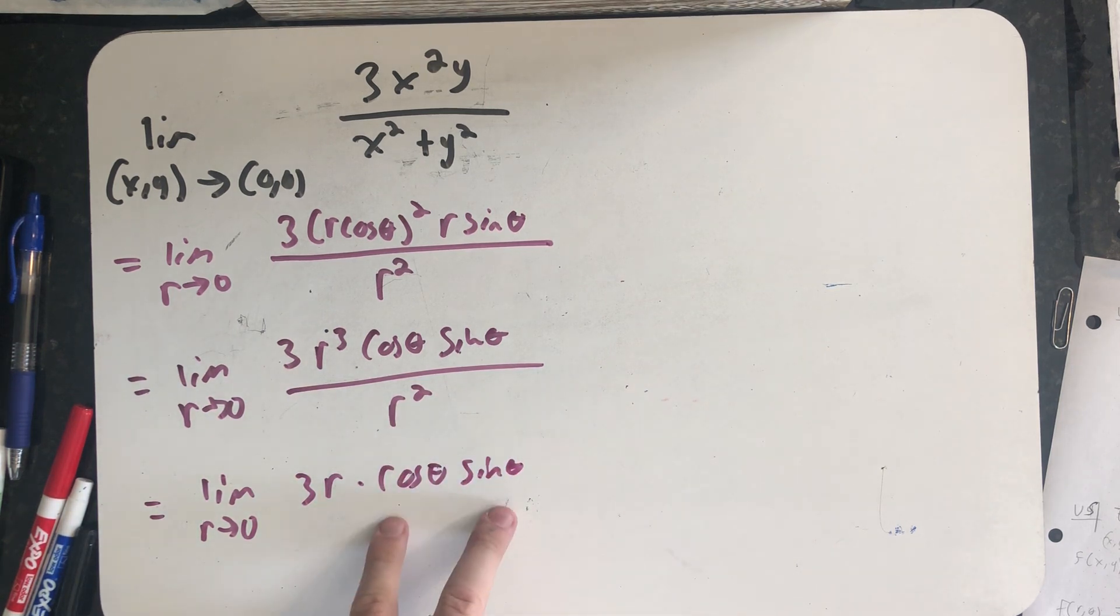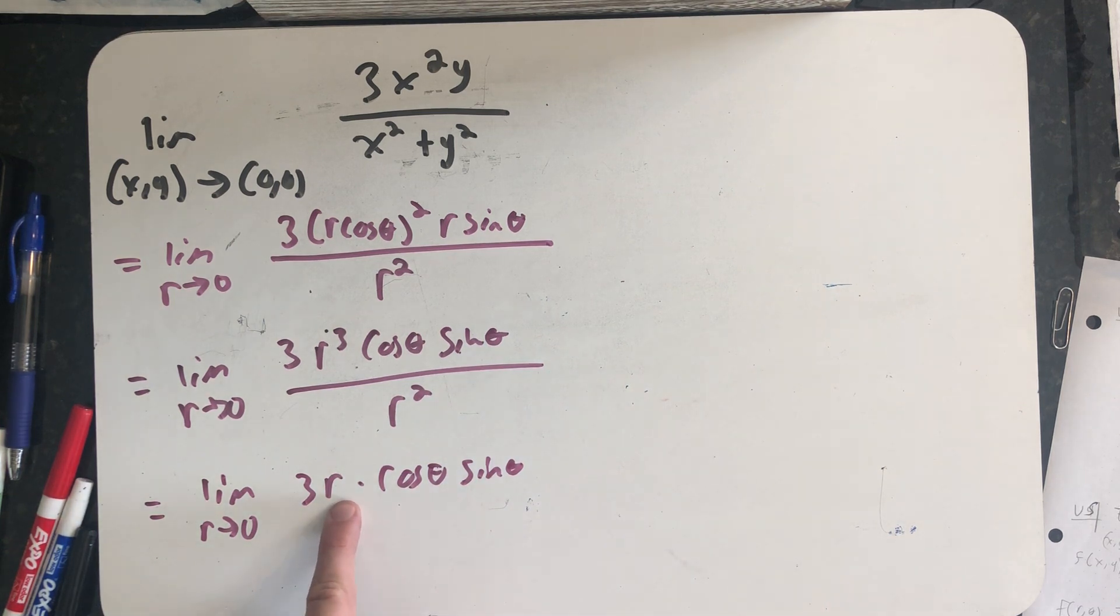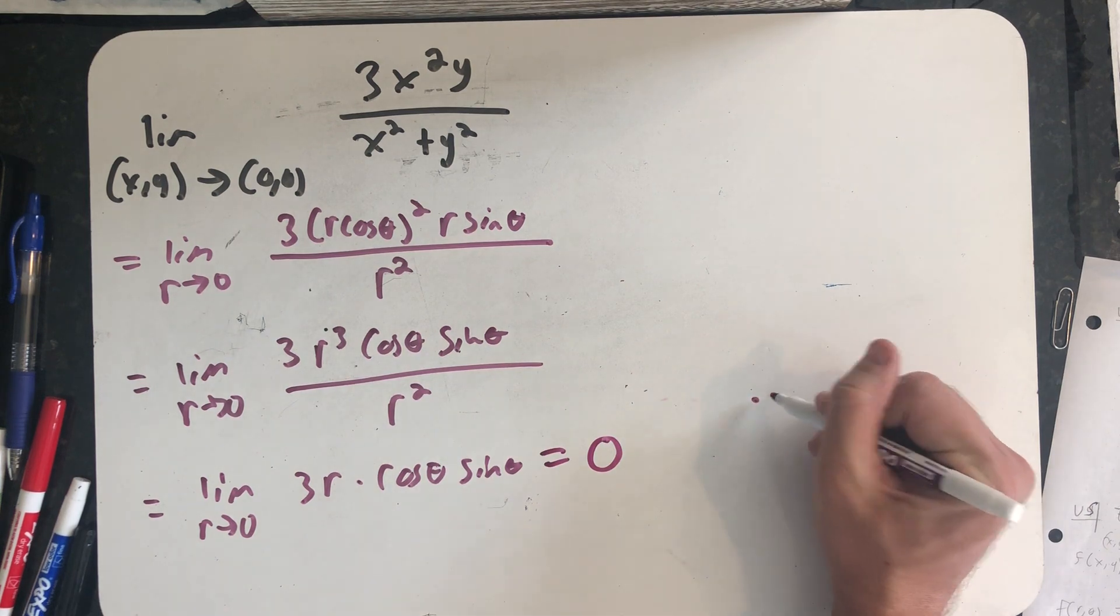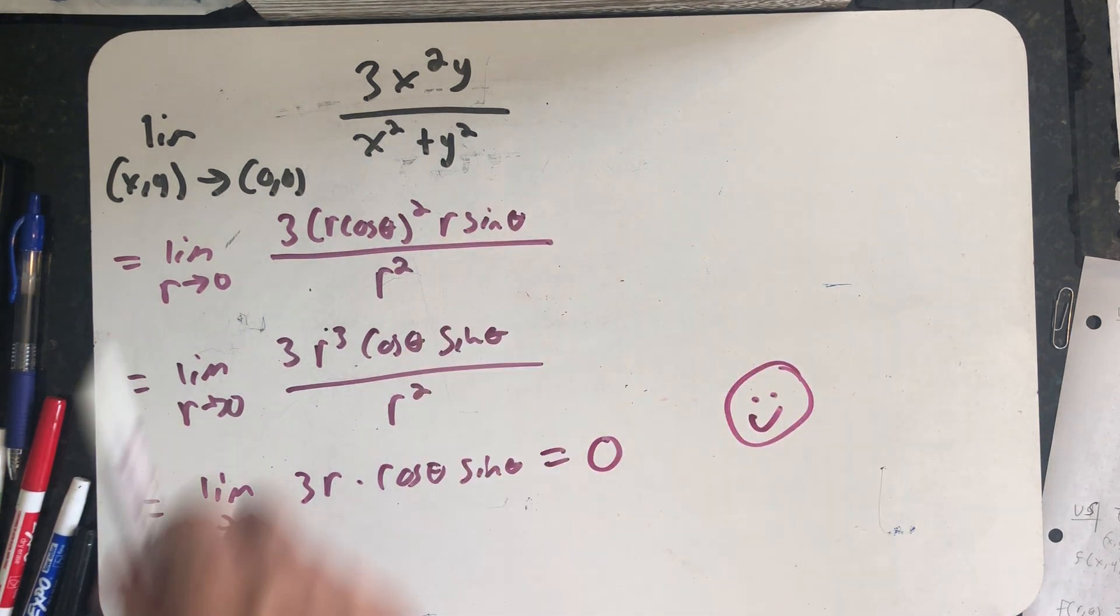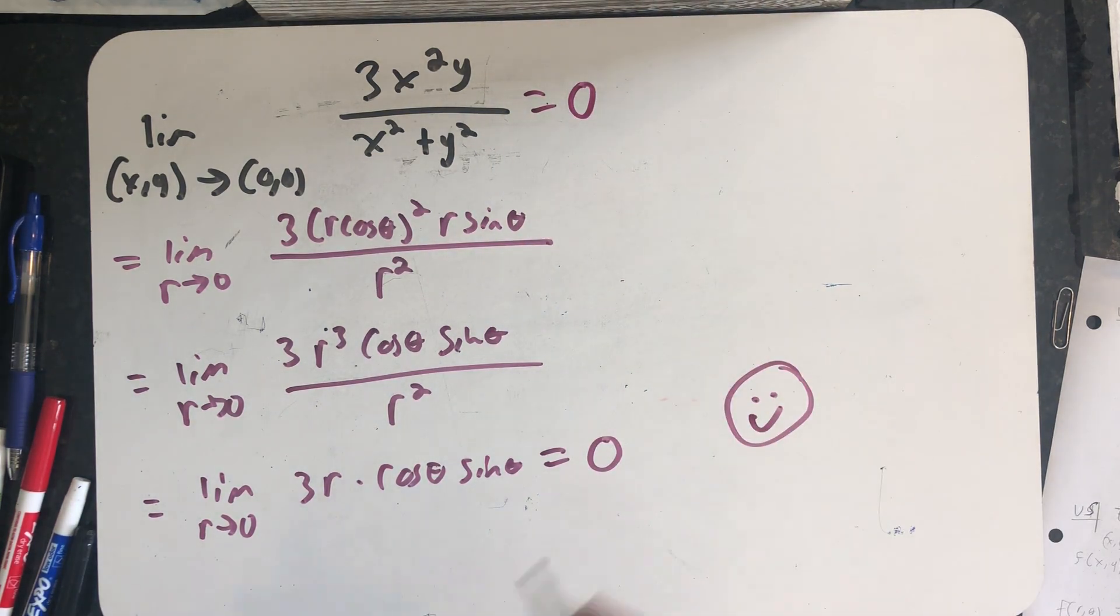Well, no matter what path I'm on, cosine theta sine theta is a product that's going to keep changing, but as r tends to zero, zero times a number is zero. And so now I know the limit of this function as I approach the origin exists and is zero.